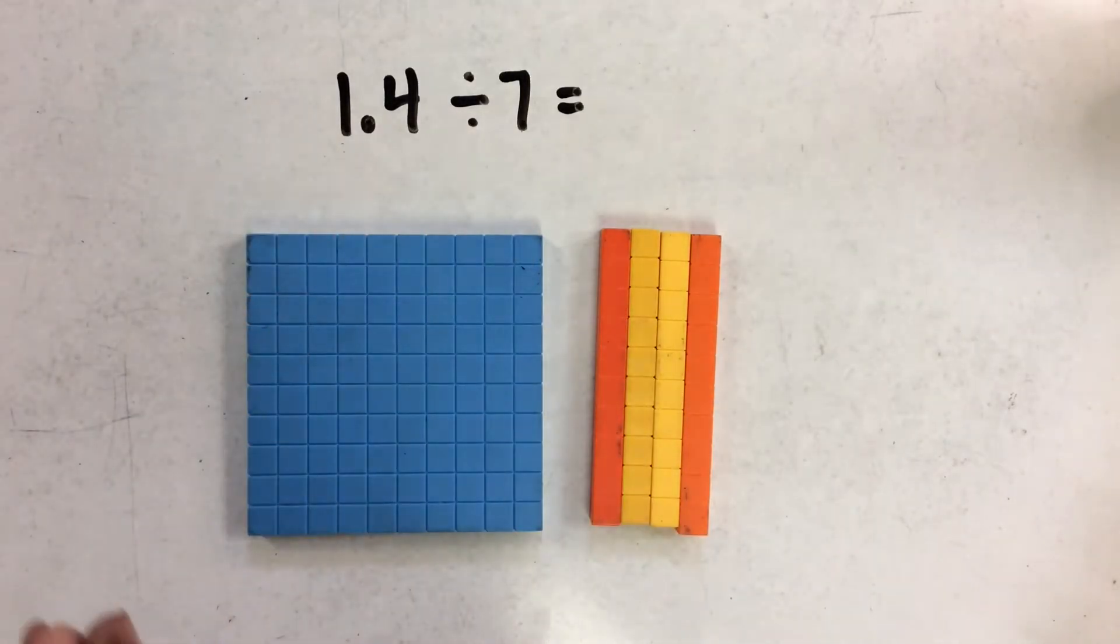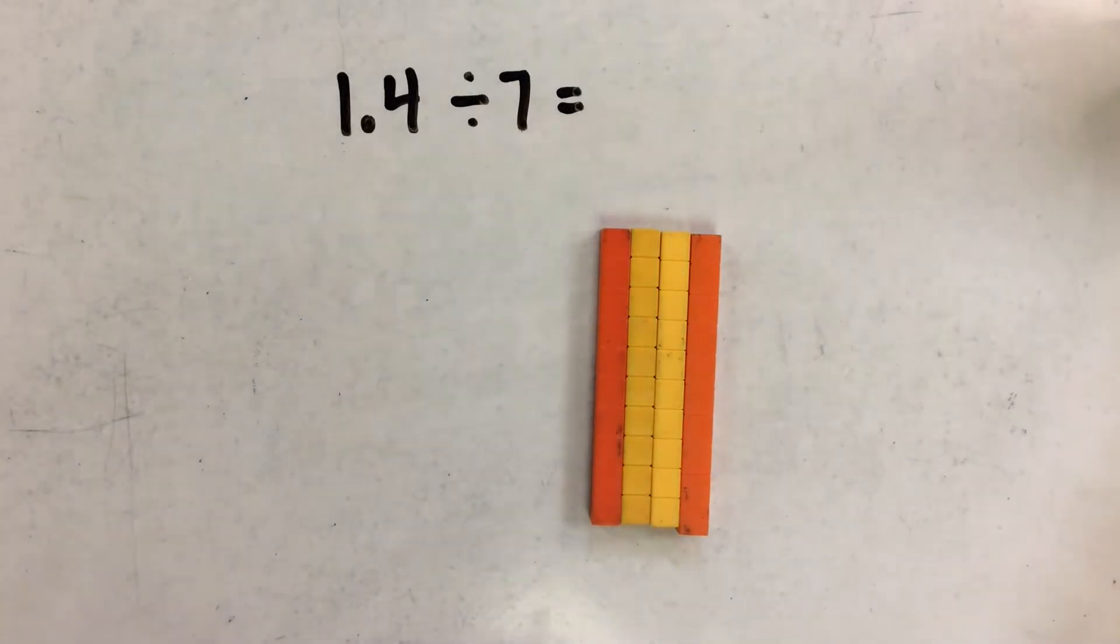And I want to put it into 7 equal groups. So I can really think about this in terms of tenths. So I have 10 tenths here, and I'm going to trade it out for 10 tenths.